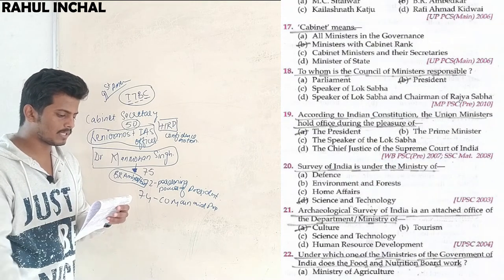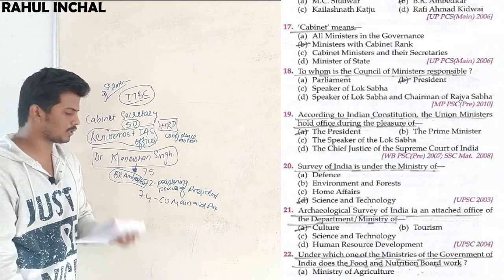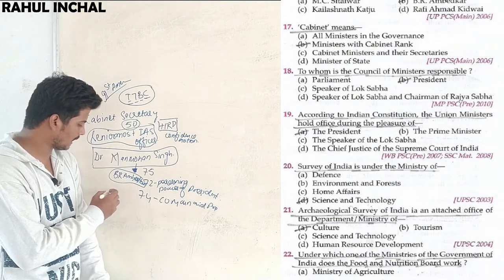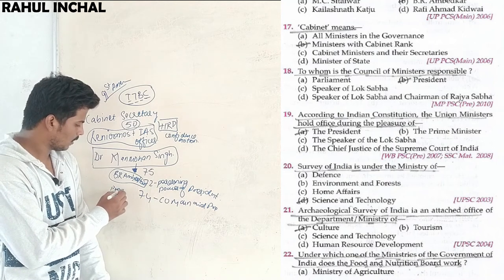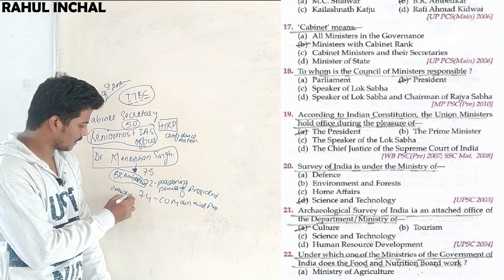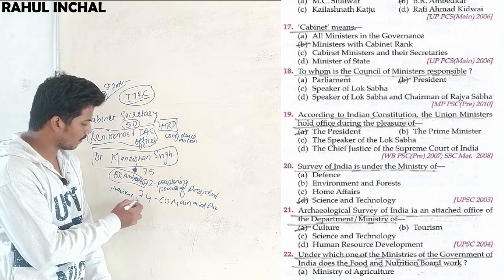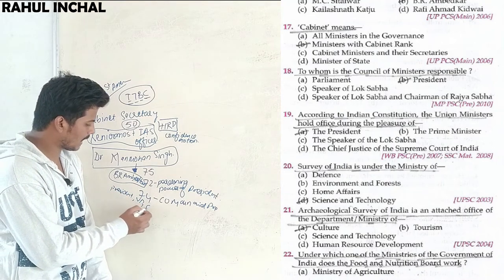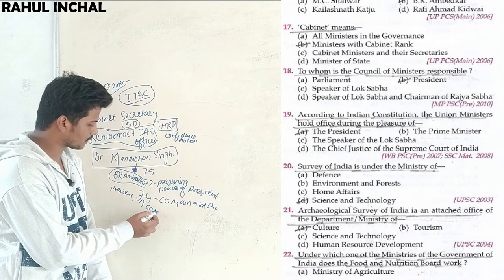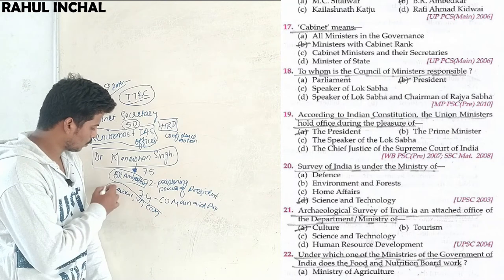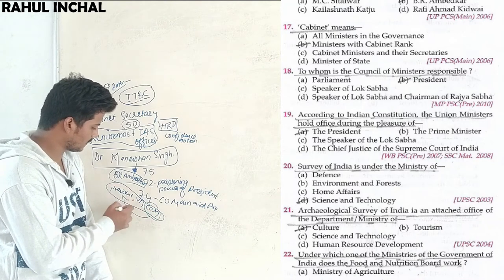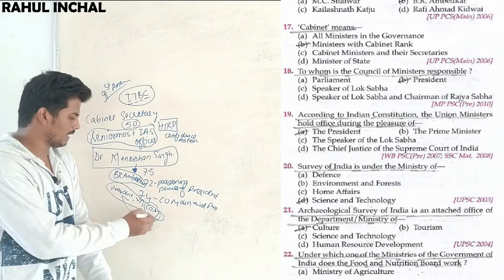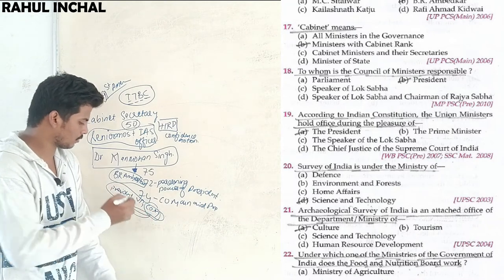To whom is the Council of Ministers responsible? As explained earlier, the Council of Ministers is responsible to the President at the union level. The union structure includes the President, the Vice President, and the Council of Ministers. The Council of Ministers is responsible to the President and can also aid the President.